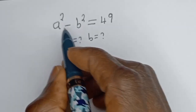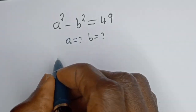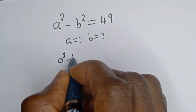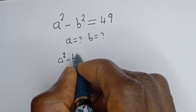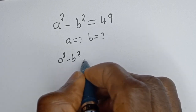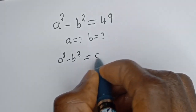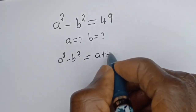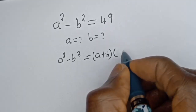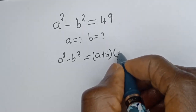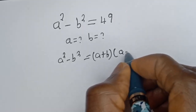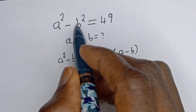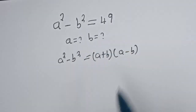A squared minus B squared equals A plus B multiplied by A minus B, because this is in the form of a difference of perfect squares.